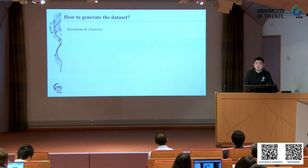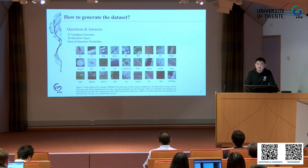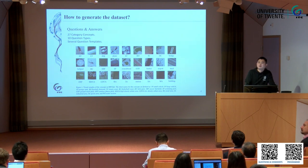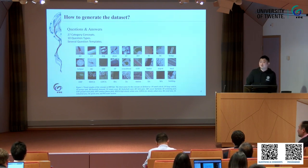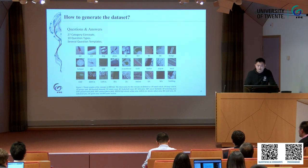For the language part — the questions and answers — we proposed 27 category concepts, which are very common and meaningful for aerial images. Here are some real examples of these concepts, like vehicles, ships, swimming pools, trucks, and stations.